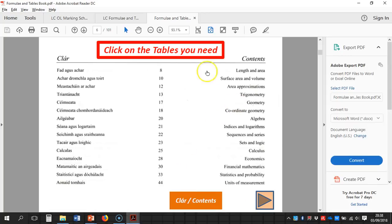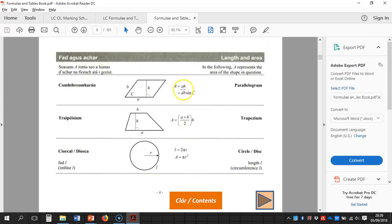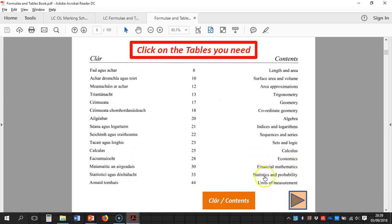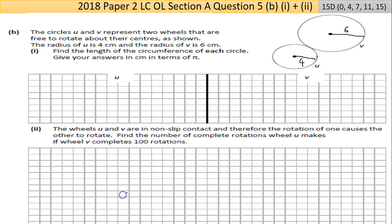The question says find the length of the circumference of each circle. Give your answer in centimeters in terms of π. Now the math tables—if you go to the circle, let me just bring up the math tables. So that's the math tables. You look in here. You have parallelogram, quadrilateral, trapezius, circle. So the circumference is equal to 2πr. The area is equal to πr². So if you're stuck in any question, always go through and see can you find the shape.